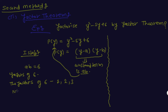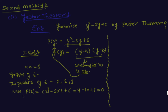Now we check p(2): putting y = 2, we get 2² − 5×2 + 6 = 4 − 10 + 6 = 0. Since p(2) = 0, (y − 2) is a factor of p(y).